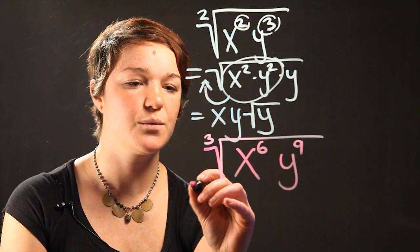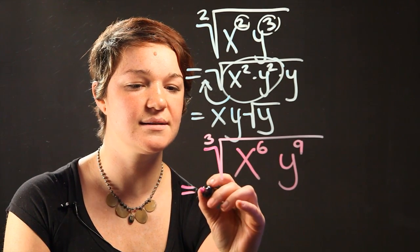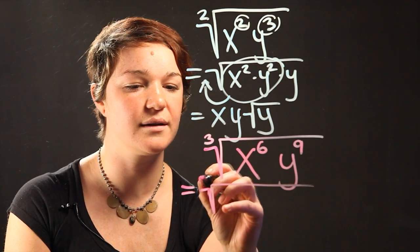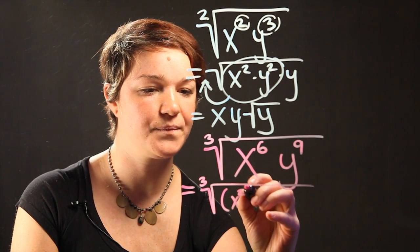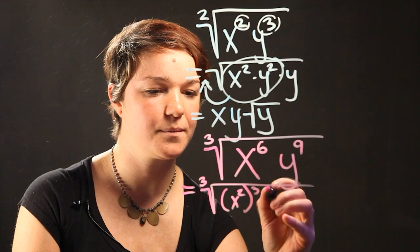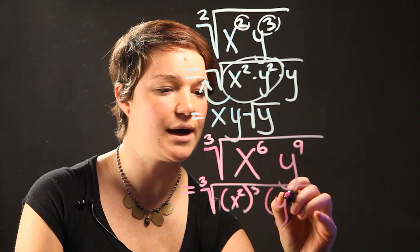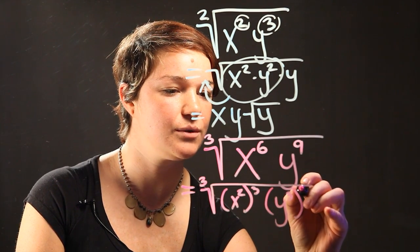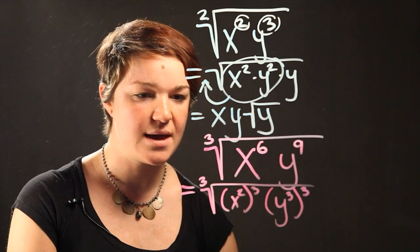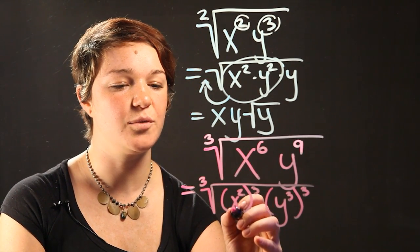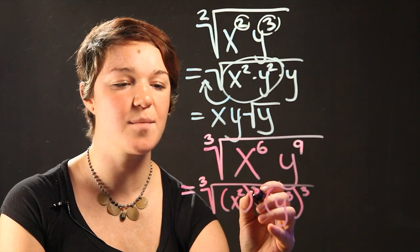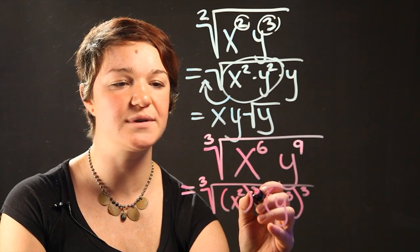So we can look at this as the same as the third root of x squared to the third power. Here what we're doing is, because we're taking a variable with a certain power and taking it to a higher power, we're going to multiply those powers.